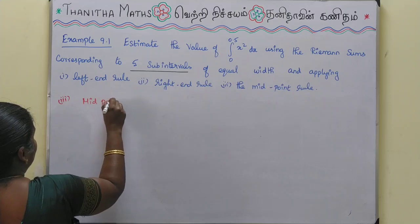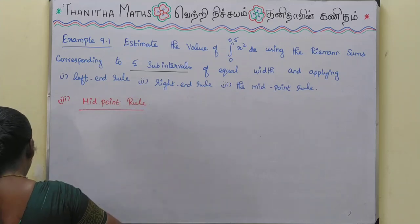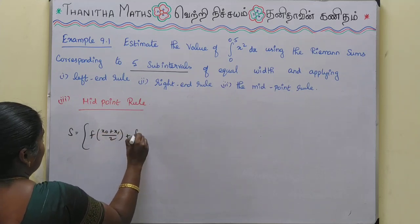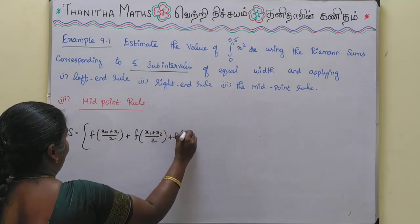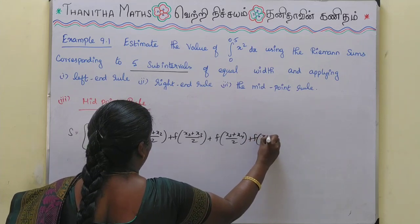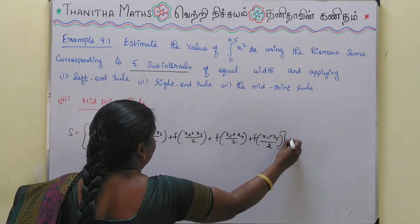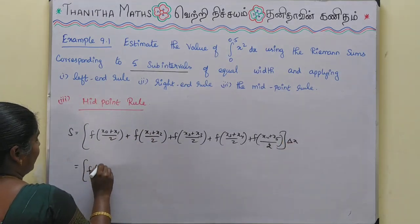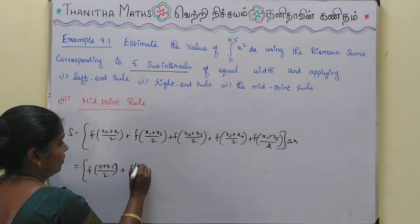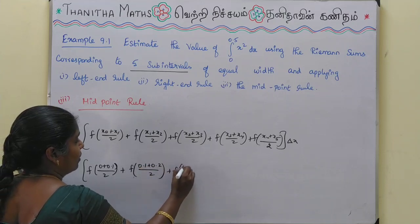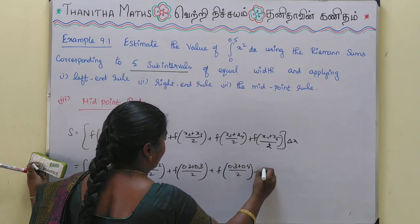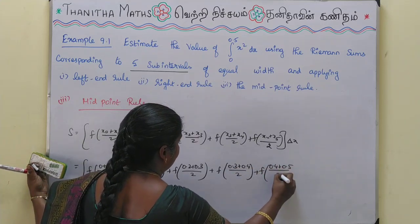For the midpoint rule, the formula is S = [f((x0+x1)/2) + f((x1+x2)/2) + f((x2+x3)/2) + f((x3+x4)/2) + f((x4+x5)/2)] × delta x. Substituting the x values: f((0+0.1)/2) + f((0.1+0.2)/2) + f((0.2+0.3)/2) + f((0.3+0.4)/2) + f((0.4+0.5)/2), multiplied by 0.1.